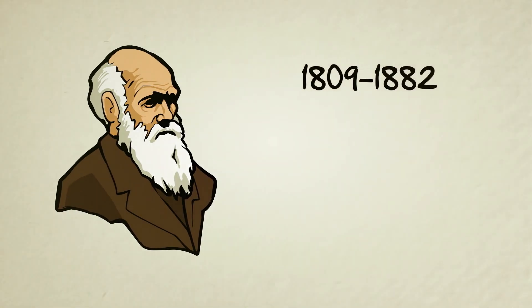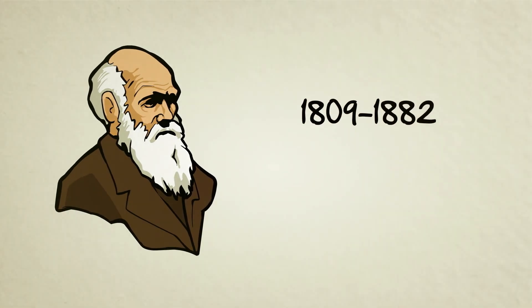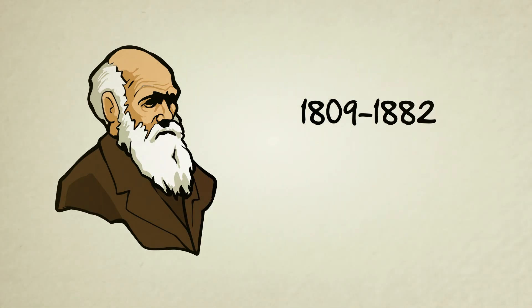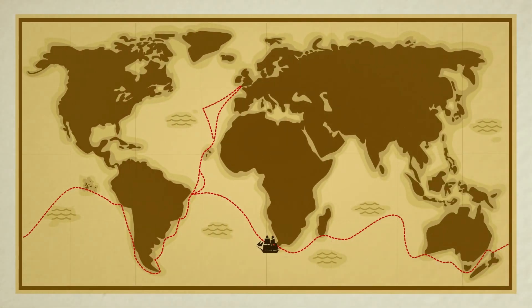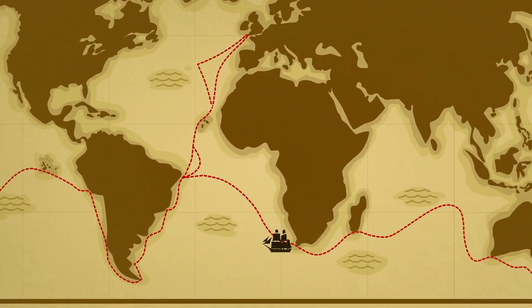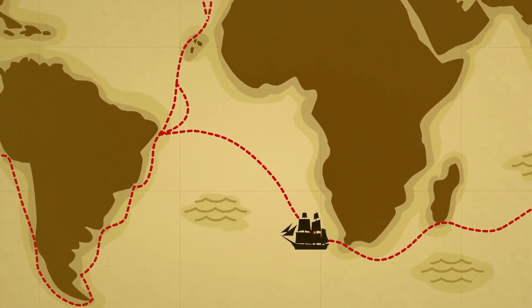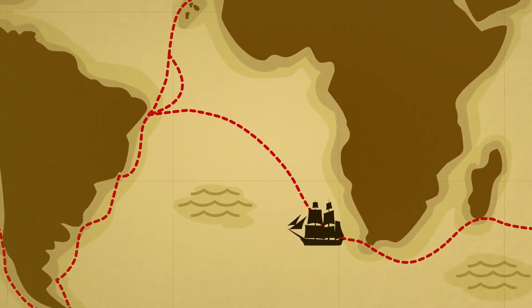Charles Darwin, who lived from 1809 to 1882, was a naturalist — someone who studies nature. At the start of his career, he traveled the world by ship, collecting and documenting plants and animals.